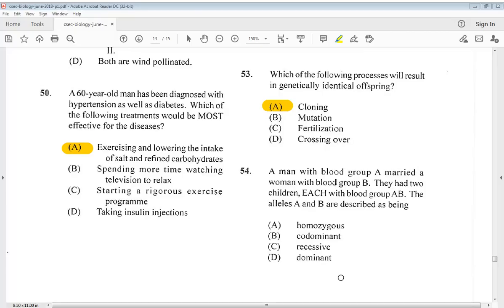Question 54. A man with blood group A married a woman with blood group B. They had two children, each with blood group AB. The alleles A and B are described as being: A. Homozygous. B. Co-dominant. C. Recessive. Or D. Dominant. So the answer for 54 is B, co-dominant.